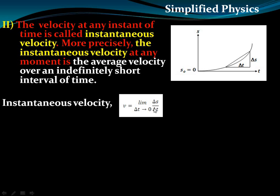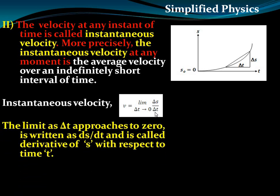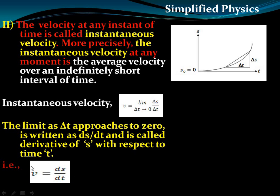In terms of calculus, instantaneous velocity v equals the limit as delta t approaches zero of delta s by delta t, which is written as ds/dt. This quantity is called the derivative of displacement with respect to time t, and that is the instantaneous velocity.